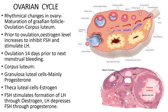The corpus luteum will persist for about 12 to 14 days if fertilization does not occur — this is called the corpus luteum of menstruation — and will then degenerate to form corpus albicans. If fertilization and implantation occur, human chorionic gonadotrophin prolongs the corpus luteum, which then persists for about four months of pregnancy as the corpus luteum of pregnancy, secreting progesterone, before degenerating to form a fibrous nodule called corpus albicans.